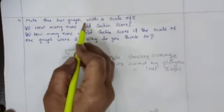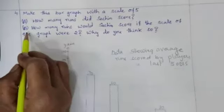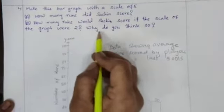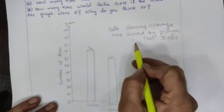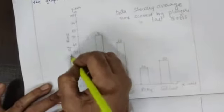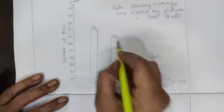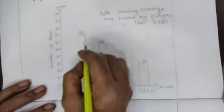Fourth question: Make this bar graph with a scale of 5. Part A: How many runs did Sachin score? Part B: How many runs would Sachin score if the scale of the graph were 2? Why do you think so? So here is the given bar graph children. This bar graph shows average runs scored by players in last 5 ODIs. This x-axis shows players, y-axis shows number of runs. Here Sachin scored 70, Dravid 60, Ricky 20, Gilchrist 30.